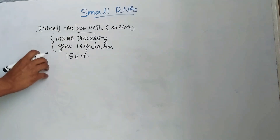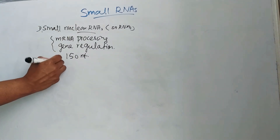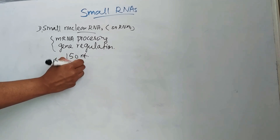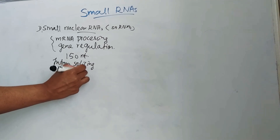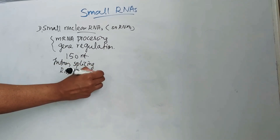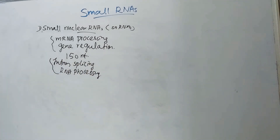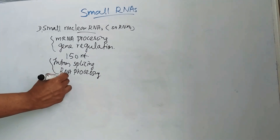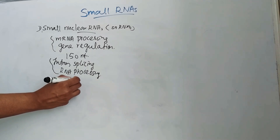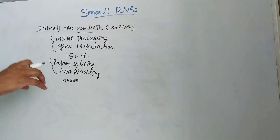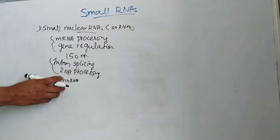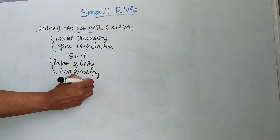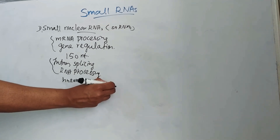An important function of these snRNAs is in intron splicing and RNA processing. Another function is in the processing of HnRNA — that is the precursor of messenger RNA — in the nucleus.